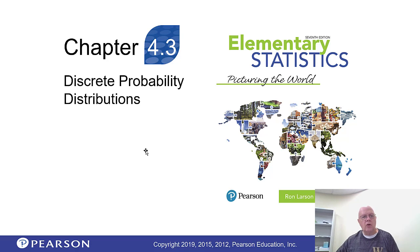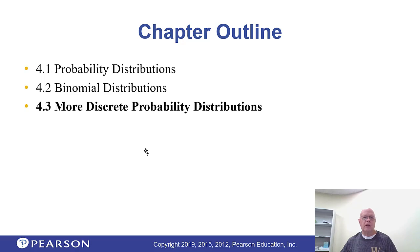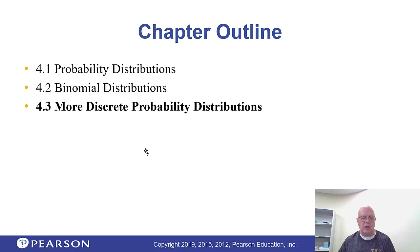Hello there. We're going to wrap up the discrete probability distributions today. I've borrowed a little bit from another book because I think it's a little bit better than ours. More discrete probability distributions — in particular the geometric one and the Poisson.